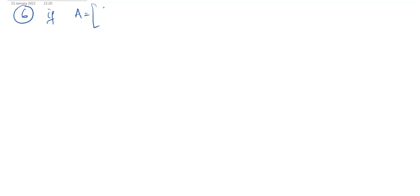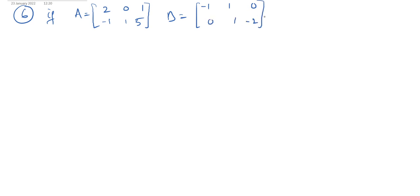Sixth question: if capital A = [2, 0, 1; 5, −1, 1; 5] and capital B = [−1, 1; 1, 0; 0, 1; −2], then find (ABᵀ)ᵀ.